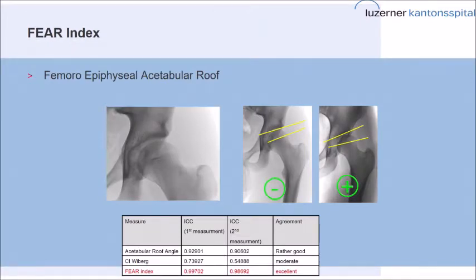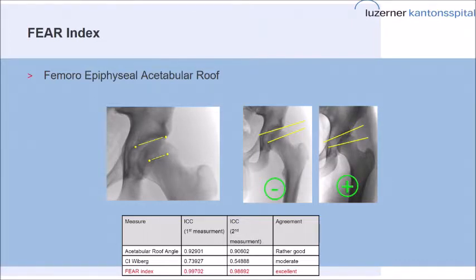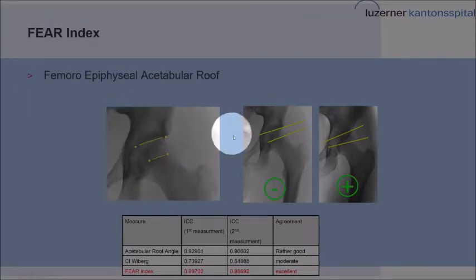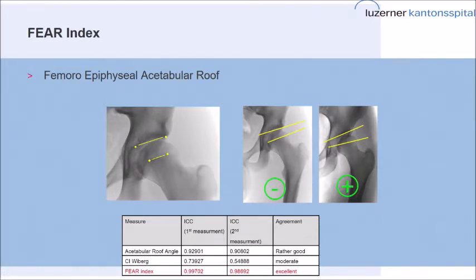We came up with the FEAR index — the Femoral Epiphyseal Acetabular Roof index — where we measured an angle between the acetabular index line from medial to the most lateral point of the acetabular roof, and the central third of the femoral growth plate. This forms an angle which can be open medially or open laterally. If open medially, the joint-reacting forces across the physis are medially directed with reference to the acetabular roof — we called this negative. If open laterally, so the forces were directed laterally, we called this positive. We performed an ICC which showed quite high inter-observer and intra-observer agreement.